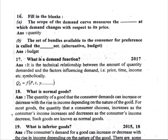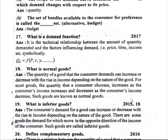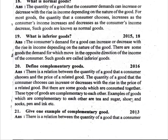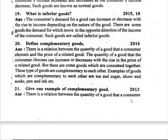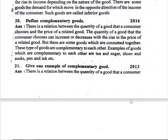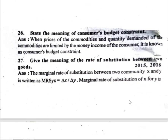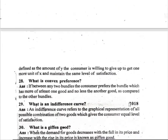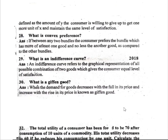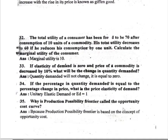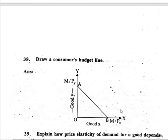Question 13, 14, 15 are important. Question 16: fill in the blanks. Question 17: define demand function. What is a normal good? Question 19: what is an inferior good? What is a complementary good? Give one example of complementary goods. Question 26, 27, 28, 29, 30, and 32–35 are all important.